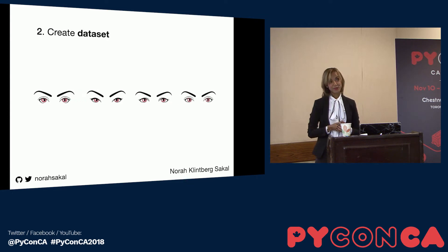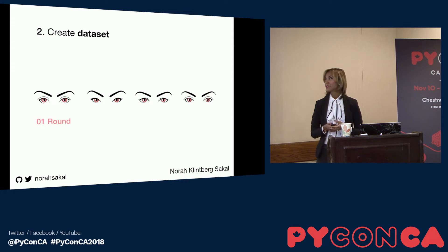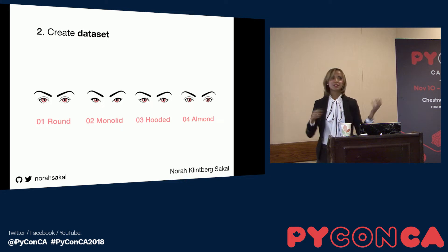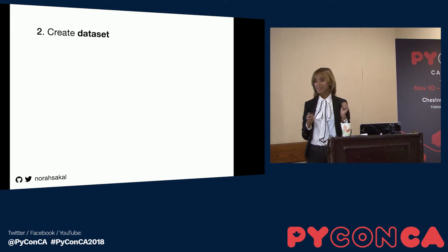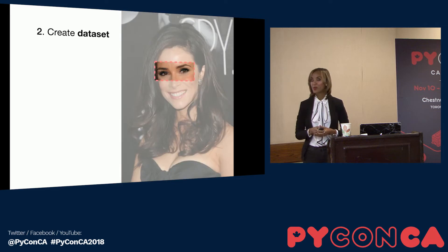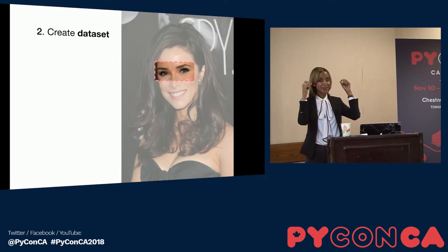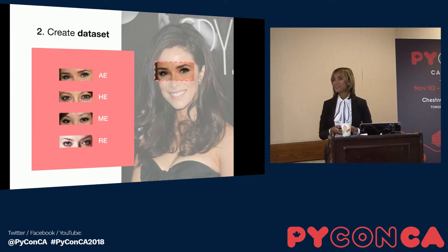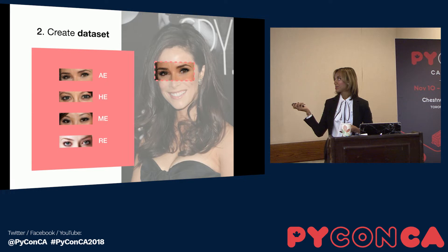I investigated eyes even further. There are four distinct shapes out there: round eyes, monolid eyes, hooded eyes, and almond-shaped eyes. There's a lot of variety — like deep set or wide set — but these four are the most distinct ones. This is almond eyes, hooded eyes, monolid eyes, and round eyes.